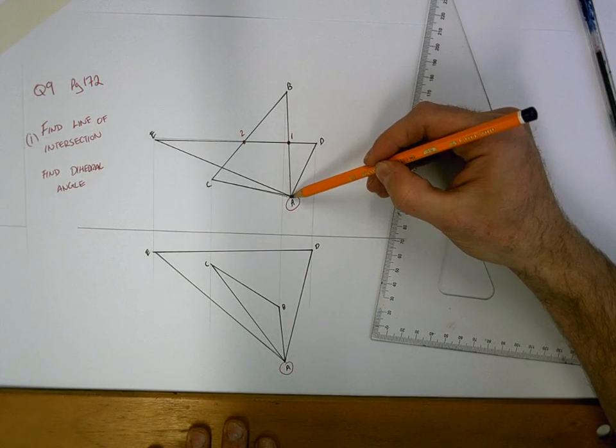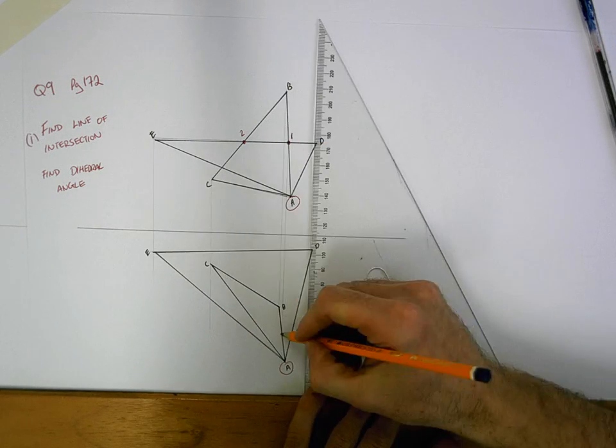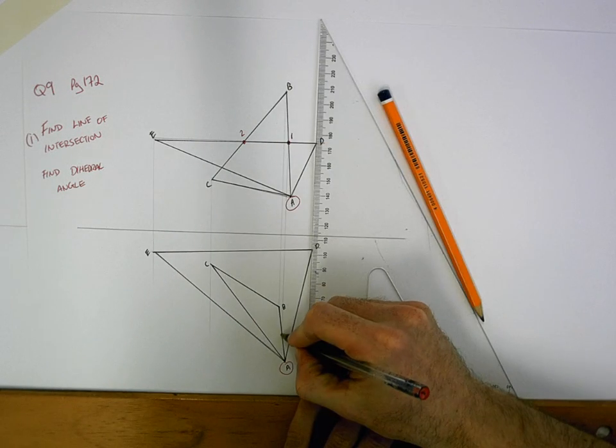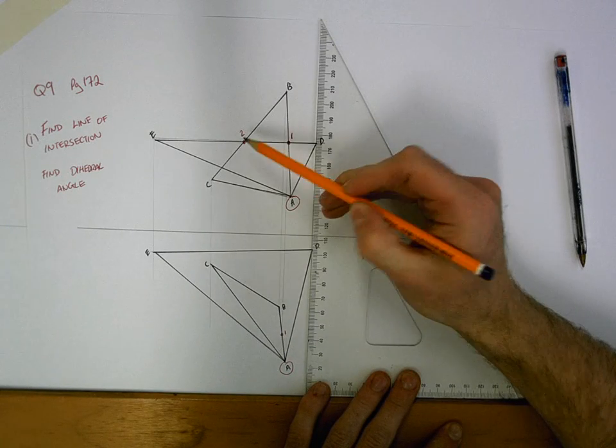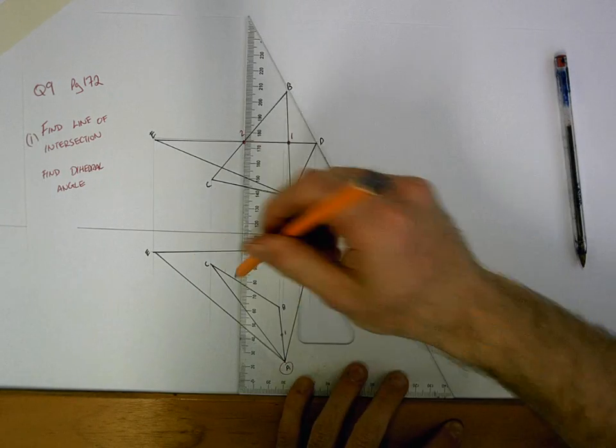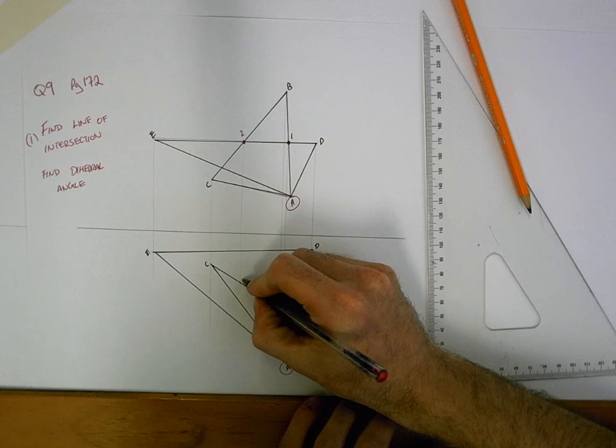Point 1 is on the line going from A to B. So drop it down, mark it off and label it. Point 2 is on the line going from B to C. So again, drop it down, mark it and label it.